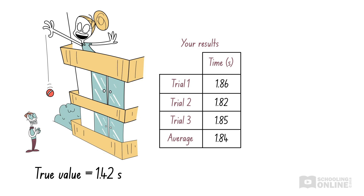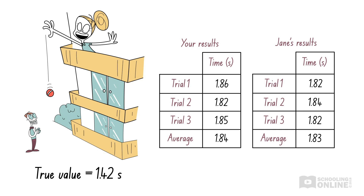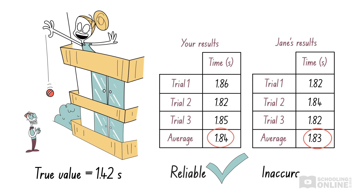Let's go back to the falling cricket ball experiment. Your classmate Jane performs the experiment just like you, using the same method and equipment. Even though her results are slightly different to yours, we can see that they agree with each other. When we calculate the average time to reach the ground, we find they are almost identical. Since Jane's results were consistent with your findings, the experimental procedure is reproducible. Therefore, the experiment is reliable, even though it produces inaccurate results.